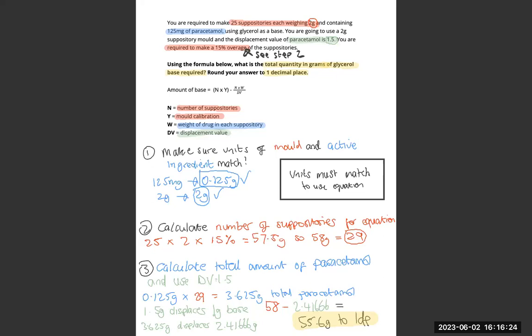We use our total quantity, we use the displacement, 58 minus 2.41666. That'll give us 55.6g to 1 decimal place. So you've seen two different methods, you'll know what you like more.